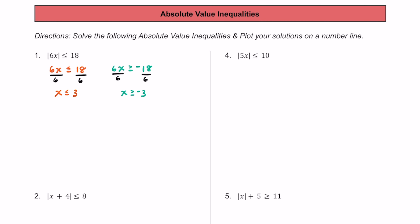While we can write our solution using two separate inequalities, we could also combine them and say that negative 3 is less than or equal to x, which is less than or equal to positive 3. Graphing this on a number line, we have 0 in the middle, negative 3 to the left, positive 3 to the right. Because we have greater than or equal to and less than or equal to symbols, we put a closed circle on negative 3 and a filled circle on positive 3, and shade in between. Any values of x between negative 3 and positive 3, including the endpoints, are solutions.